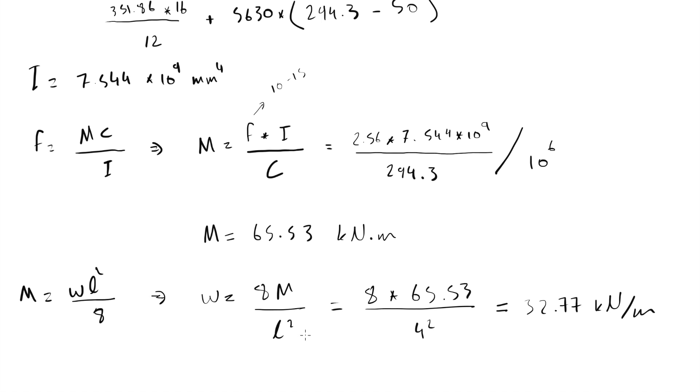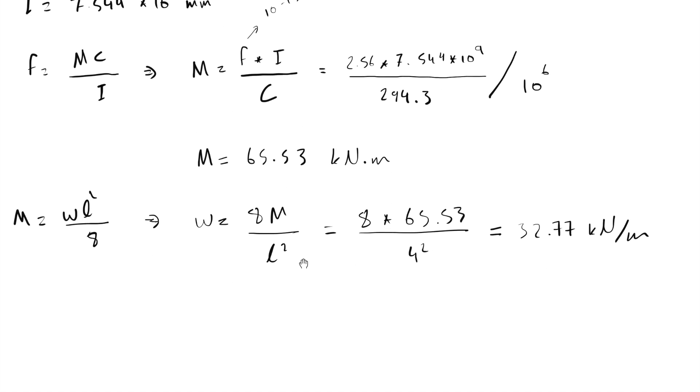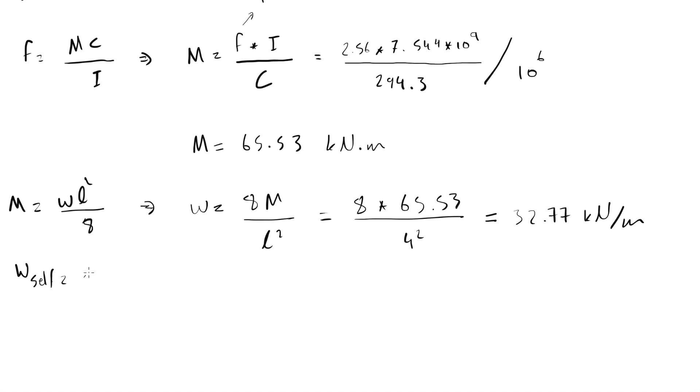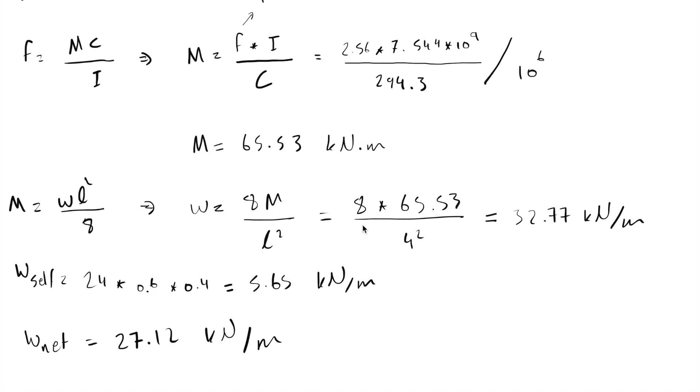As you know, we should also deduct the self weight of the beam from this value. So the self weight of the beam equals to 24 multiplied by 0.4 multiplied by 0.6, which equals to 5.65 kN/m. Now we can say maximum permissible load on the beam equals to 32.77 minus 5.65, which makes 27.12 kN/m.